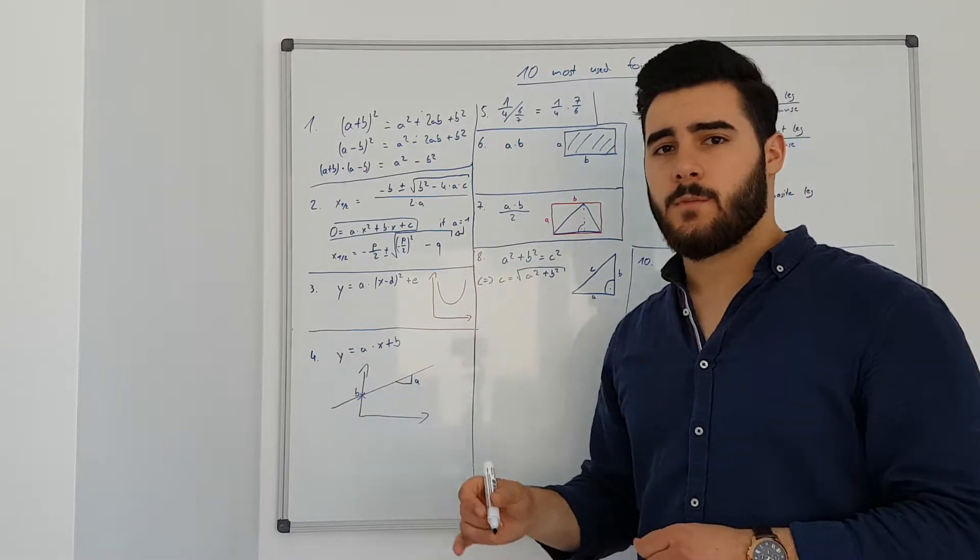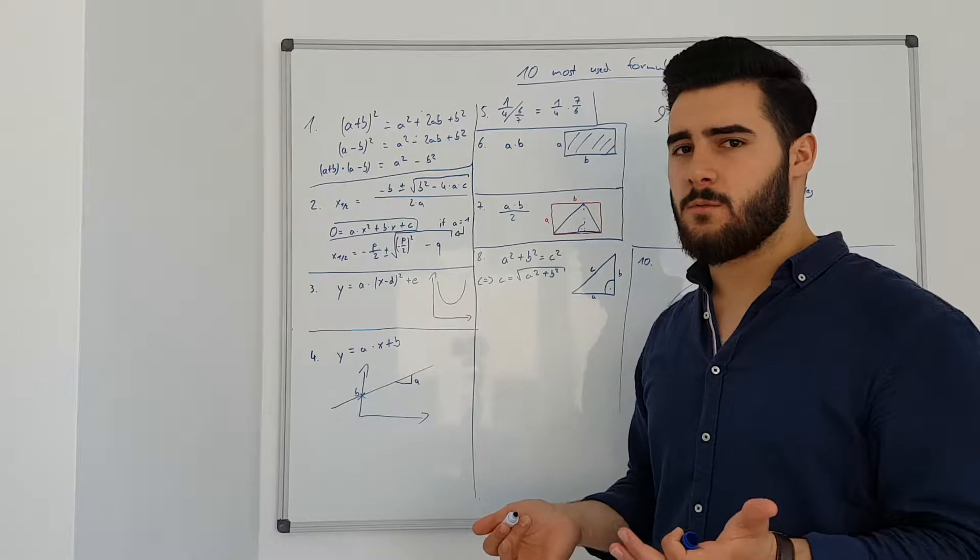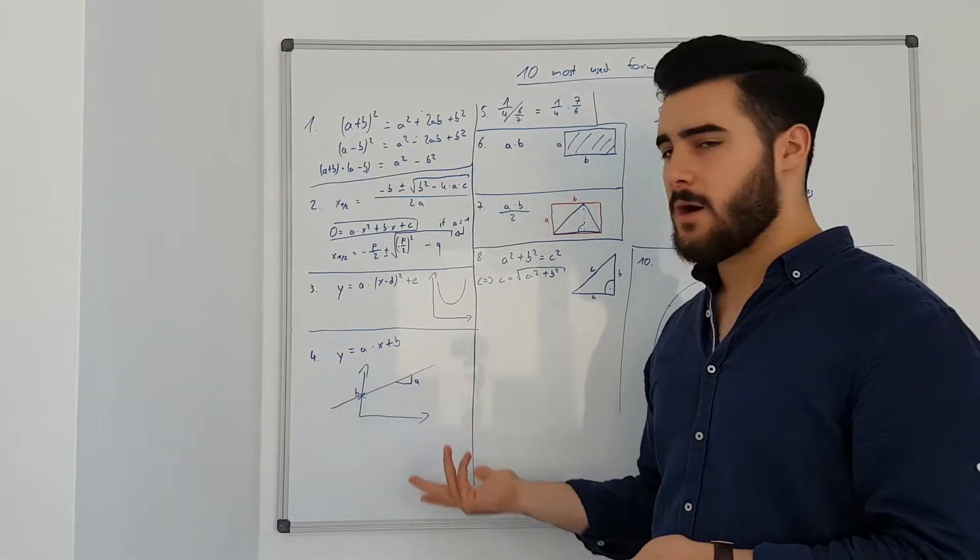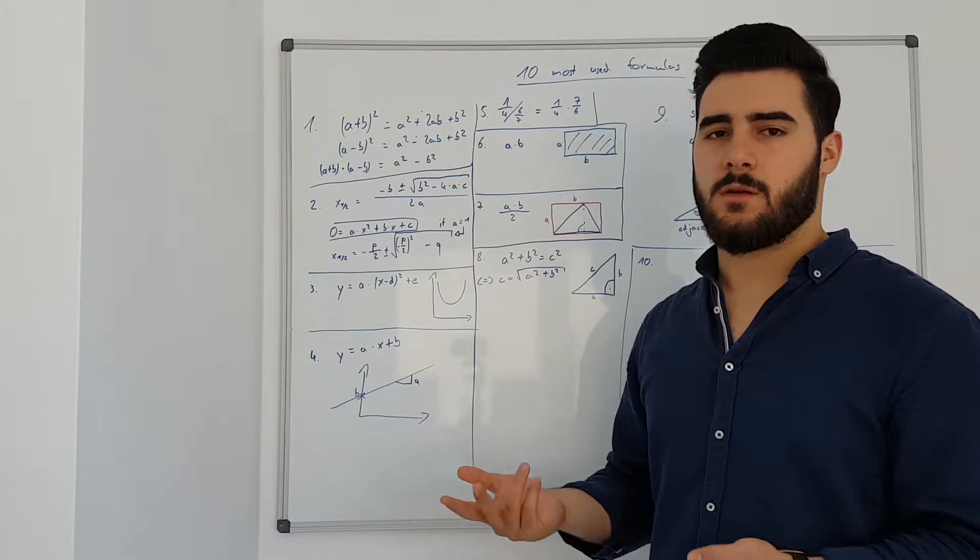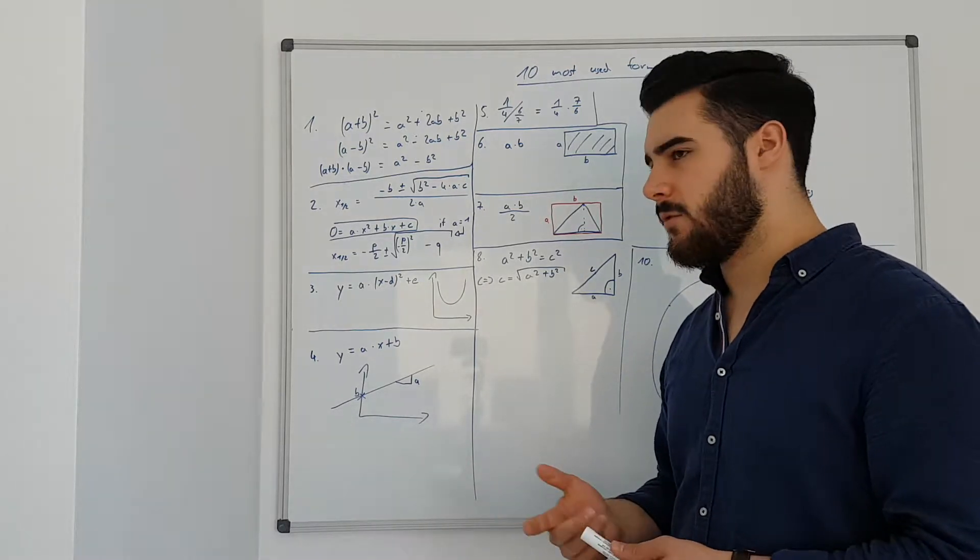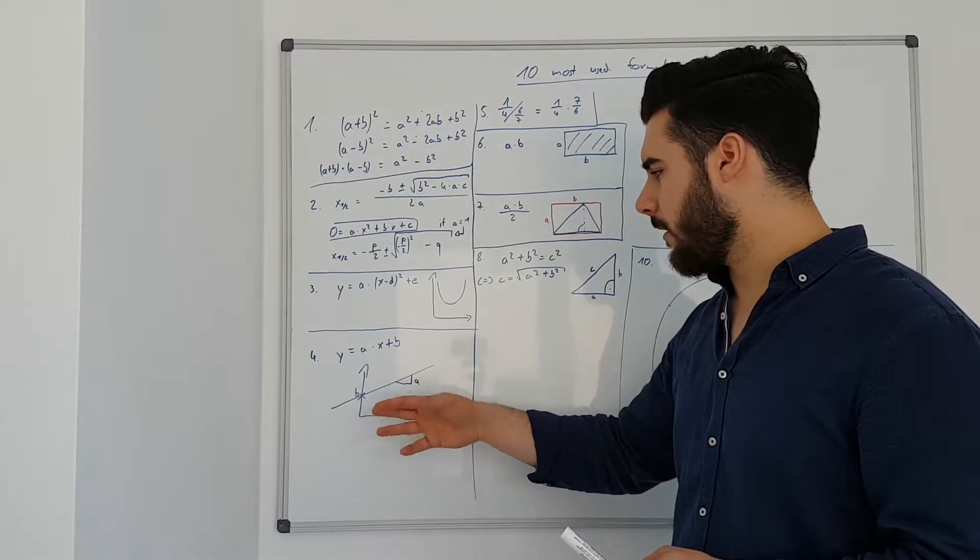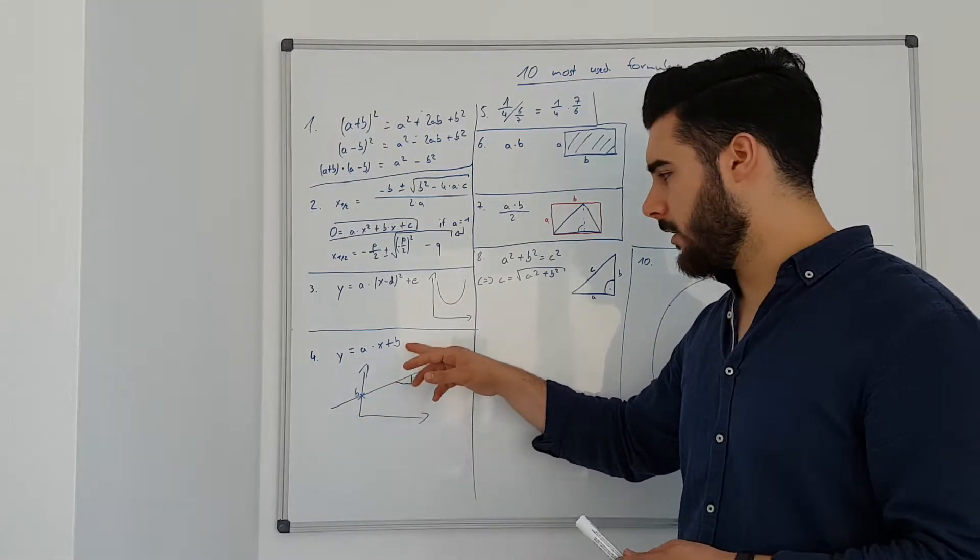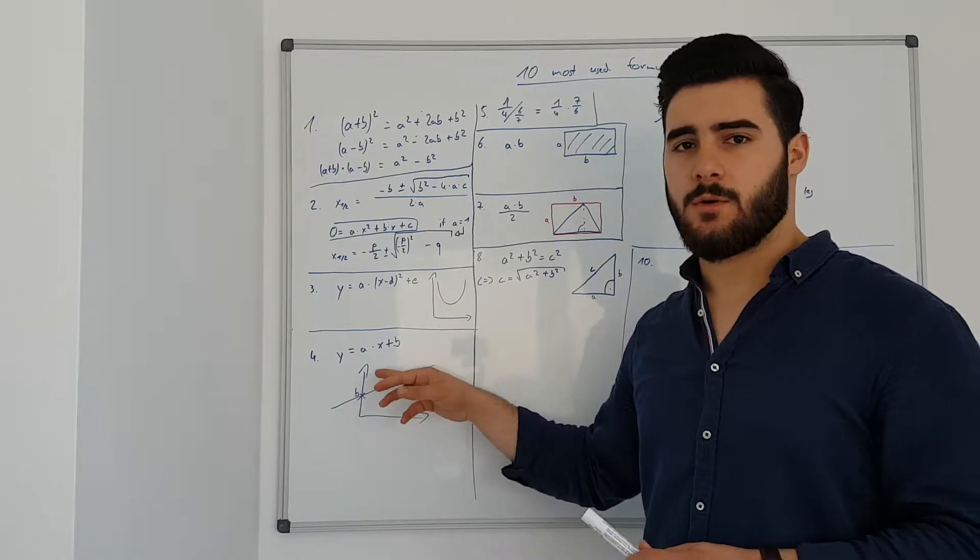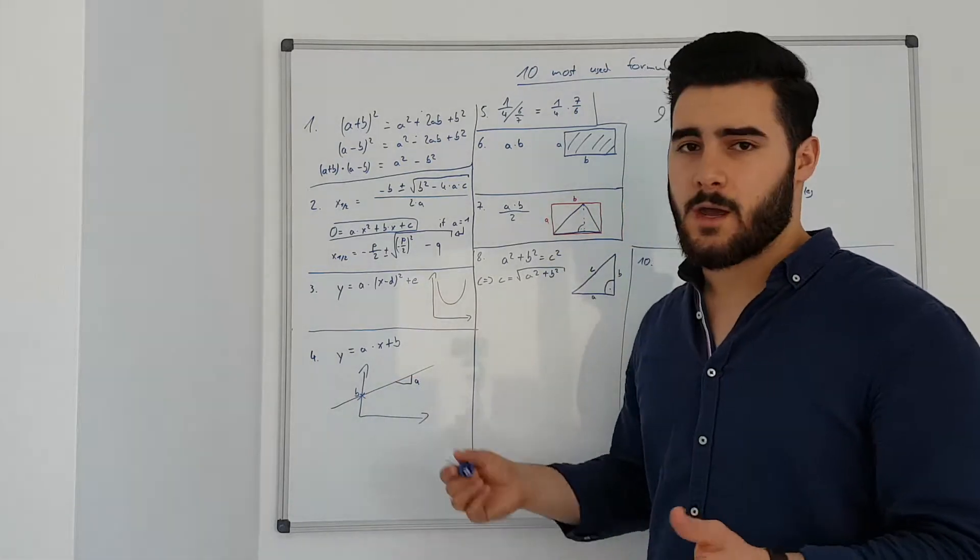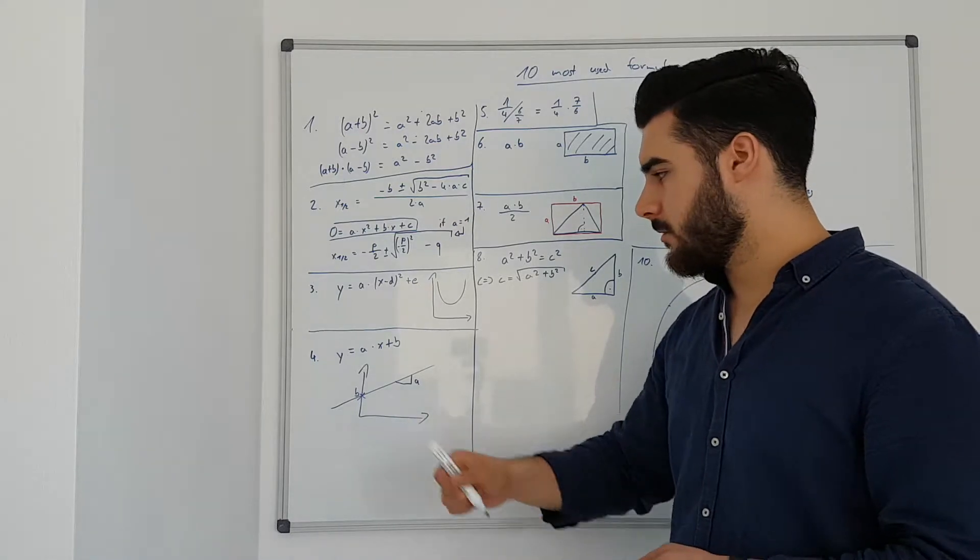Fourth one, probably one of the most basic formulas for a straight line. So a times x plus b, this is something that you have to work with on a frequent basis. Basically a for the slope, b shows the intersection point with the y-axis. And your y and x, obviously your x and y-axis.